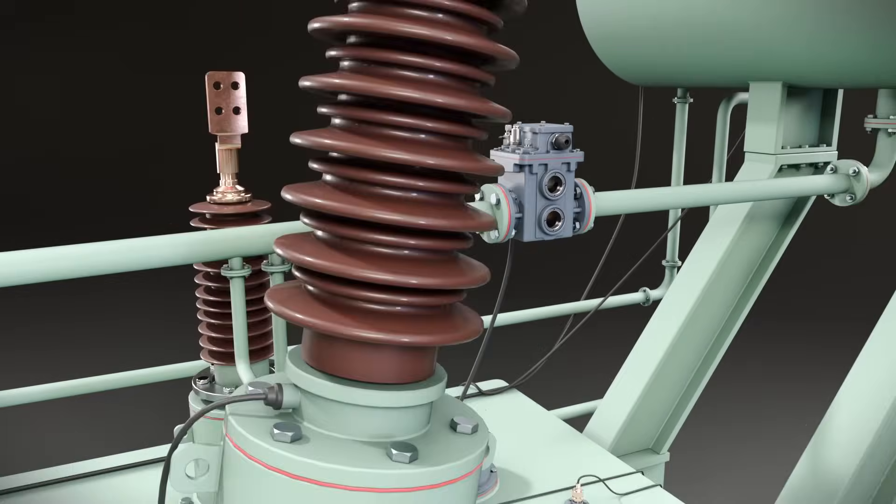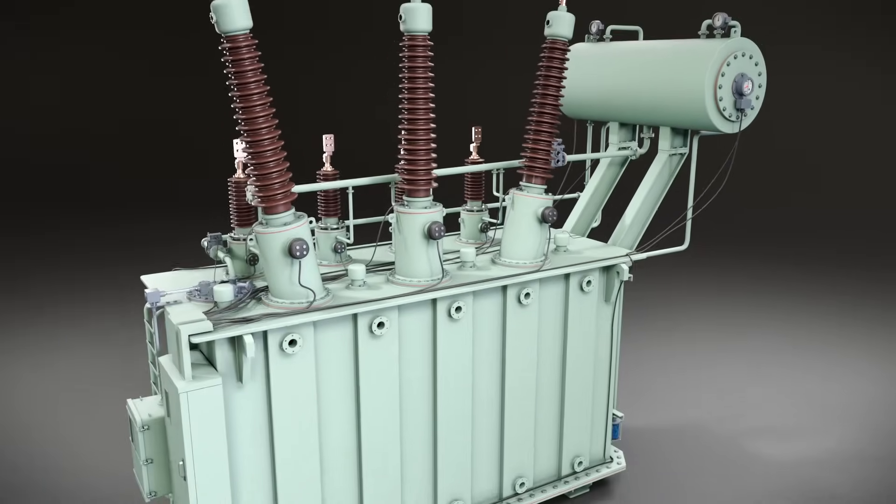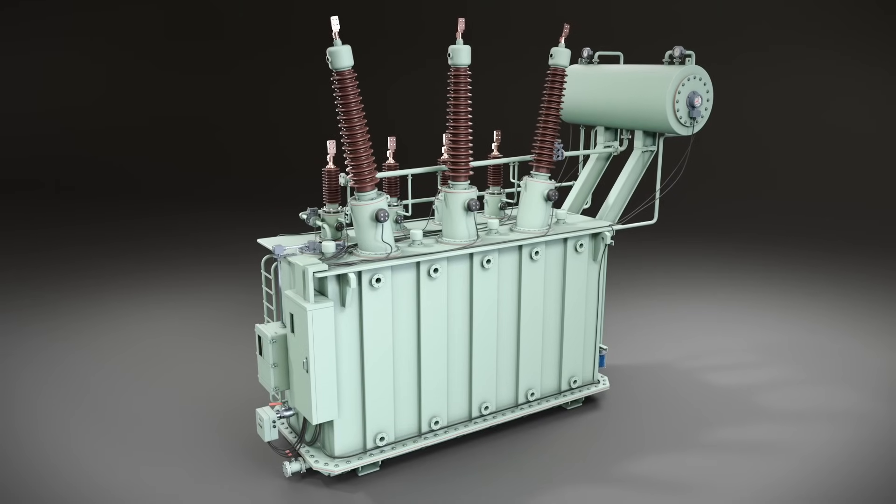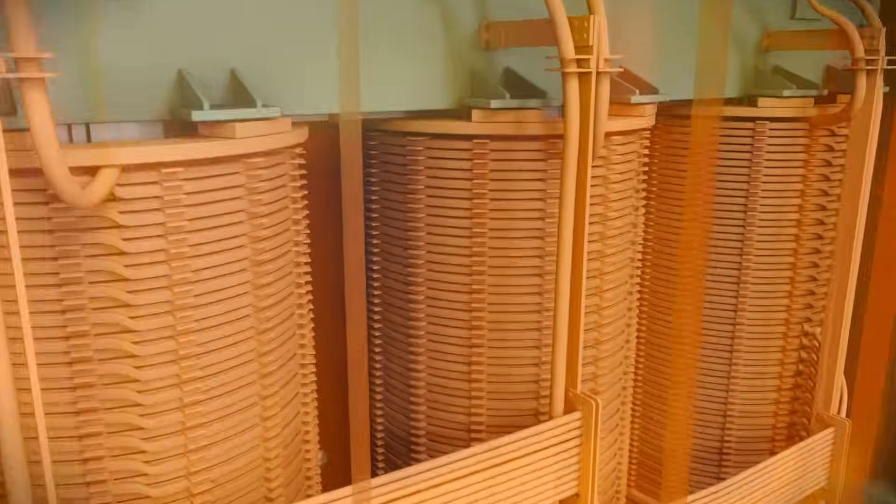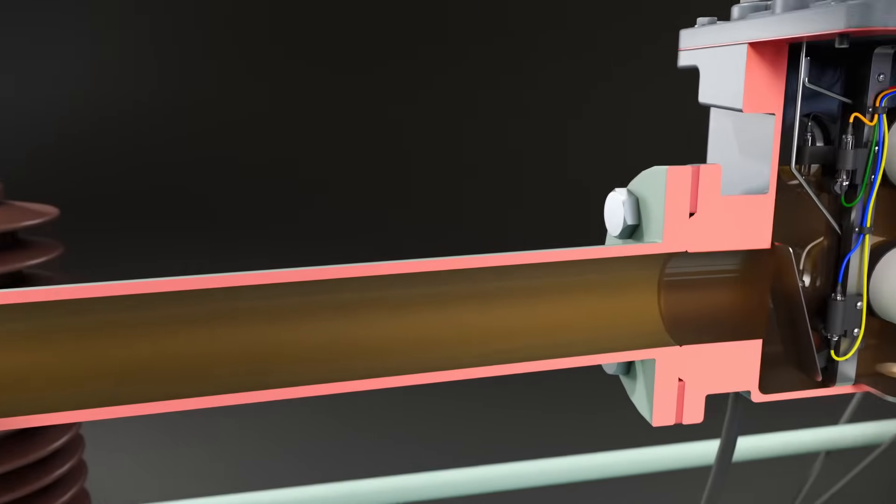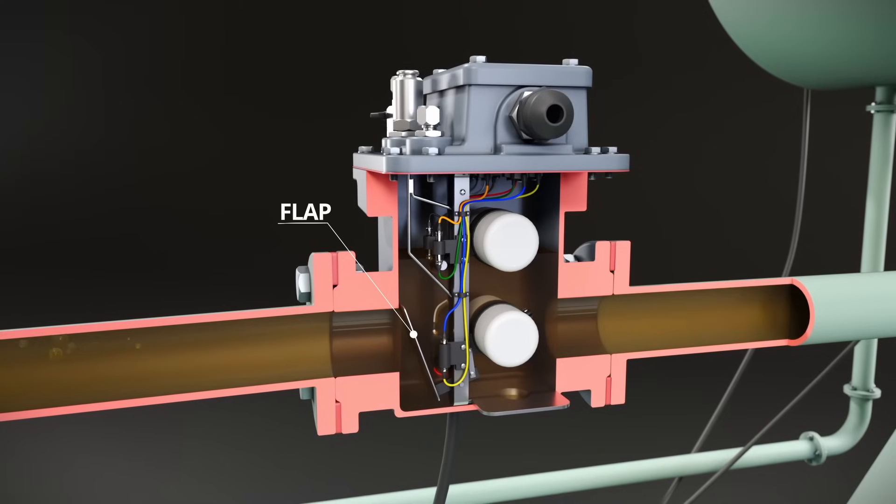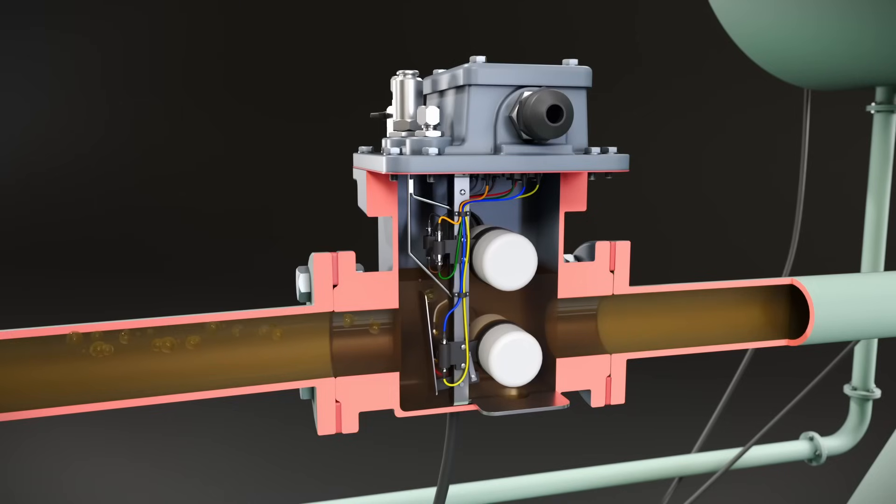The Buchholz relay is also highly effective in protecting against serious transformer faults, such as insulation failure or short circuits. When a serious fault occurs, it generates a large amount of gas rapidly. These bubbles move forcefully through the pipe connecting the main tank to the conservator and strike the flap near the oil passage in the relay. The flap, connected to the lower float, is pushed by the force of the bubbles, causing the float to move downward and activate its magnetic switch. This generates a trip signal to shut down the transformer and prevent further damage.